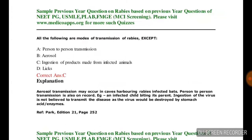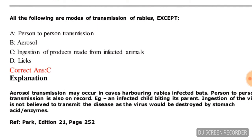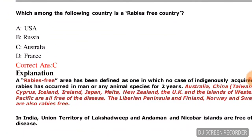Next question: all of the following are modes of transmission of rabies EXCEPT? Options are: person-to-person transmission, aerosol, injection of products made from infected animals, or licks. The correct answer is option C — injection of products made from infected animals is NOT a mode of transmission.